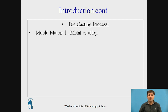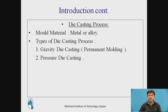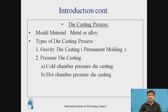Generally, the mold material employed is metal or any alloy, and Die Casting is classified into two types. The first is called Gravity Die Casting, which we will be studying in this session, also called Permanent Molding. The second is called Pressure Die Casting, which we will study in a future lecture. Pressure Die Casting is further classified into Cold Chamber Pressure Die Casting and Hot Chamber Pressure Die Casting.